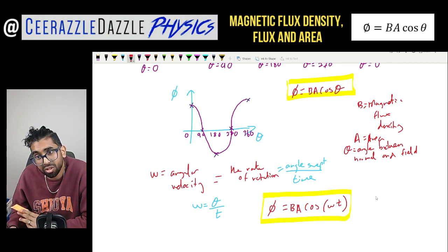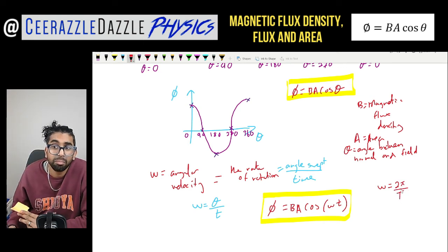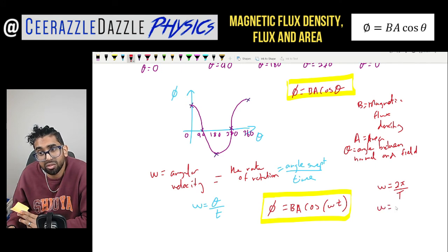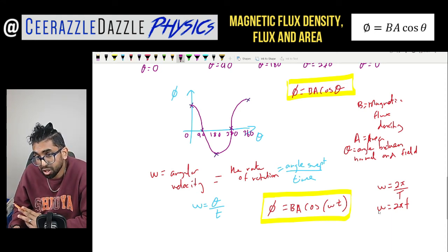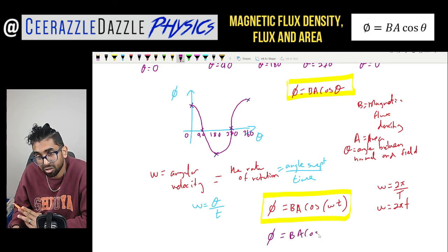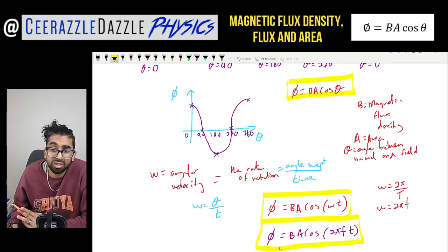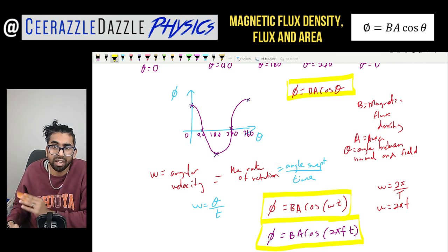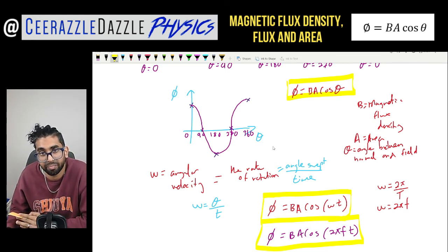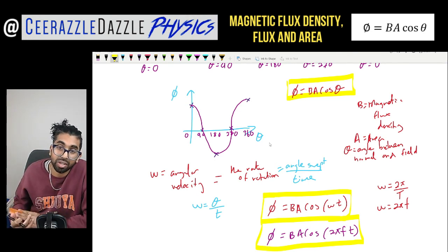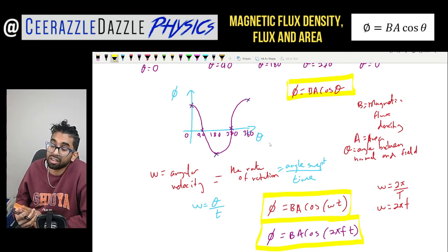You may also want to use omega equals 2 pi divided by the time period T, or omega equals 2 pi f where f is frequency. Substituting omega for 2 pi f gives the final form: phi equals BA cos(2 pi f t). So we've now combined omega into our original formula phi equals BA cos theta. That's it for another session — make sure you hit like, subscribe to keep my channel going, and good luck in your studies. Ciao ciao and goodbye!